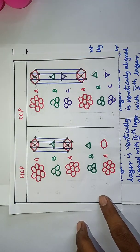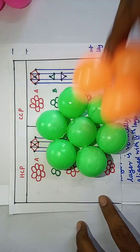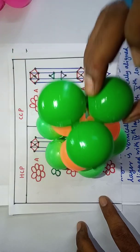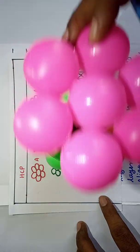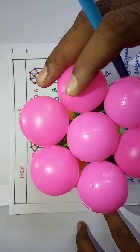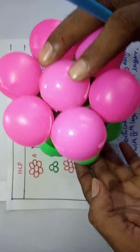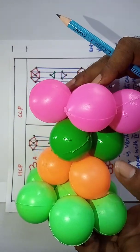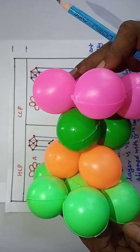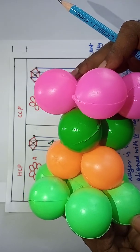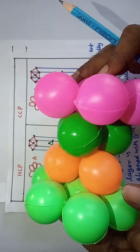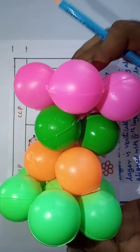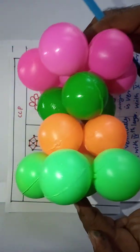In CCP arrangements, this is Layer A, this is Layer B, again Layer C. Then we place Layer A again. This type of arrangement is called CCP: Layer A, B, C, again A. Here Layer 1 and 4 are same. So in this way we get the Cubic Closed Packing.